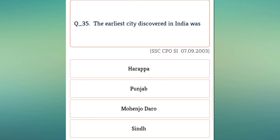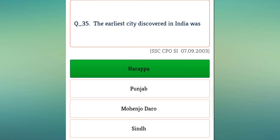The earliest city discovered in India was named Harappa. It was discovered in 1842 by Charles Masson.